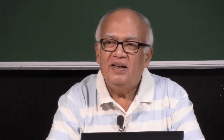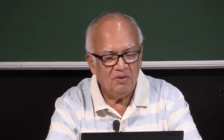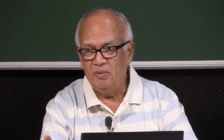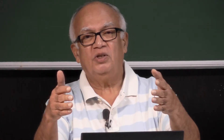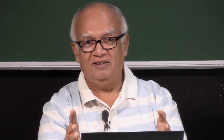Greetings. In our previous class, we discussed the Young's double slit experiment and came across some very mind-boggling situations. First of all, you get an interference pattern, which itself is incredible. You have two sources of light and then there are places where you don't see any light at all, whereas classically you expect double the amount of light over there.